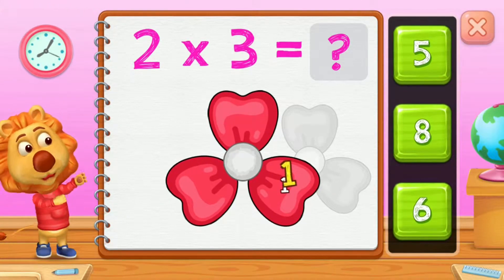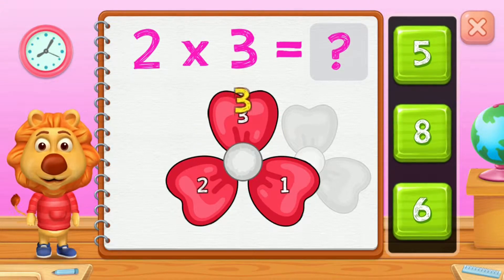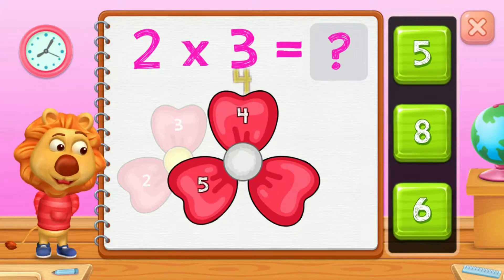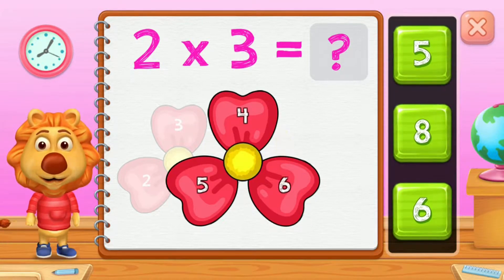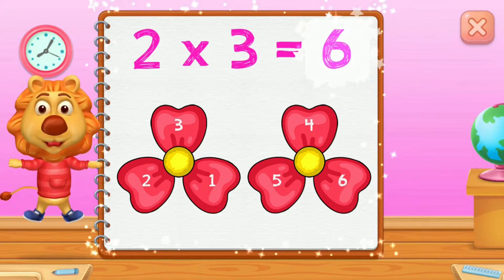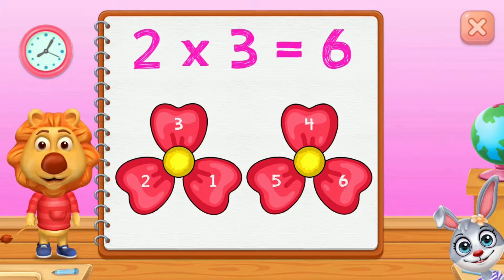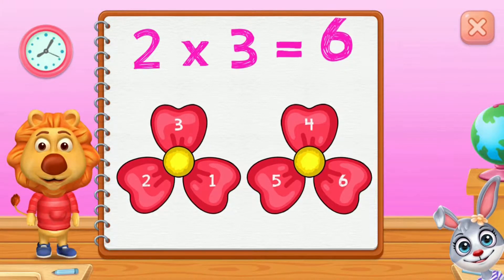1, 2, 3, 4, 5, 6. 2 groups of 3 equals 6.